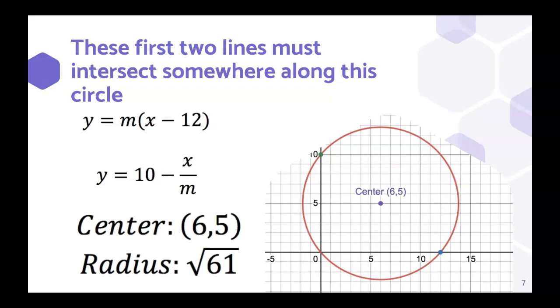With that in mind, these first two lines must intersect somewhere along this circle. So this circle, with that diameter that goes through (12, 0) and (0, 10), is going to have a center at (6, 5), the midpoint of that diameter. It's going to have a radius of square root 61, which you can find using the Pythagorean theorem to get from the center to the edge.